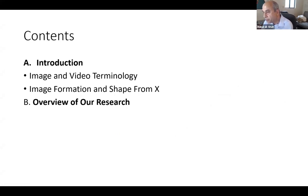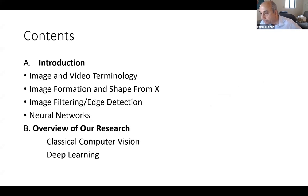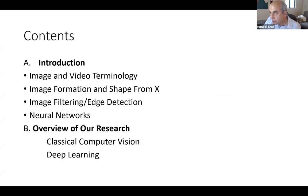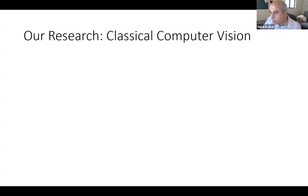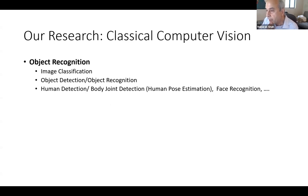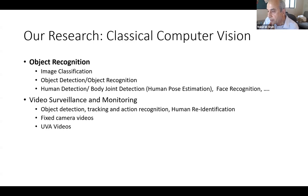Now I'm going to talk about our research, split into two parts. Classical computer vision — what we've been using for many decades — will cover object recognition including image classification, object detection, human detection, and body joint detection. The second topic is video surveillance and monitoring using fixed cameras or drone video. The third topic is crowd analysis.